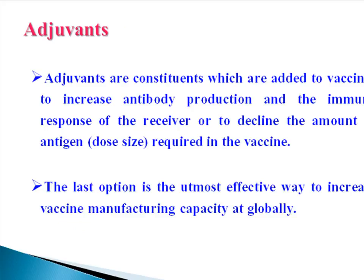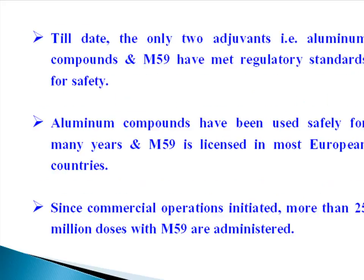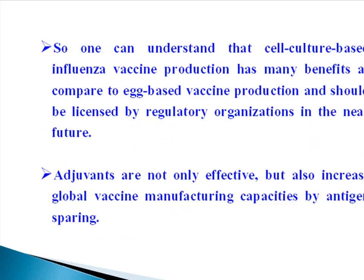Adjuvants are constituents which are added to vaccines to increase antibody production and the immune response of the receiver, and to decrease the amount of antigen (dose size) required in the vaccine. This is almost the most effective way to increase vaccine manufacturing capacity globally. Till date, the only two adjuvants — aluminum compounds and MF59 — have met regulatory standards for safety. Aluminum compounds have been used safely for many years and MF59 is licensed in most European countries. Since commercial operations initiated, more than 25 million doses with MF59 have been administered. Cell culture-based influenza vaccine production has many benefits compared to egg-based vaccine production and should be licensed by regulatory organizations in the near future. Adjuvants are not only effective but also increase global vaccine manufacturing capacities by antigen sparing.